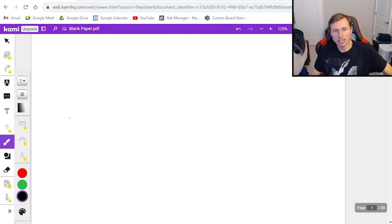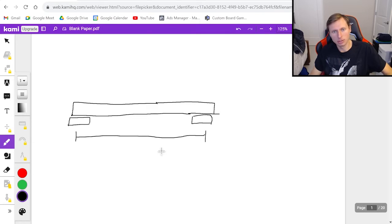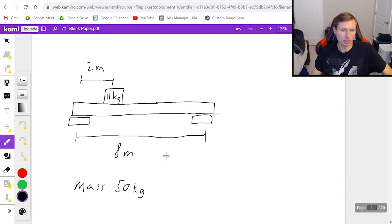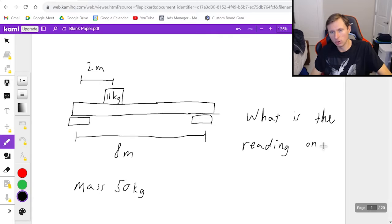This is the problem where you have two scales, like bathroom scales, and they are balancing a large log or a large beam. I'm going to say this beam has a length of 8 meters and it has a mass of 50 kilograms. I'm going to put a second mass right here, a distance of 2 meters away from the end with a mass of 11 kilograms. My question is going to be what is the reading on each scale?